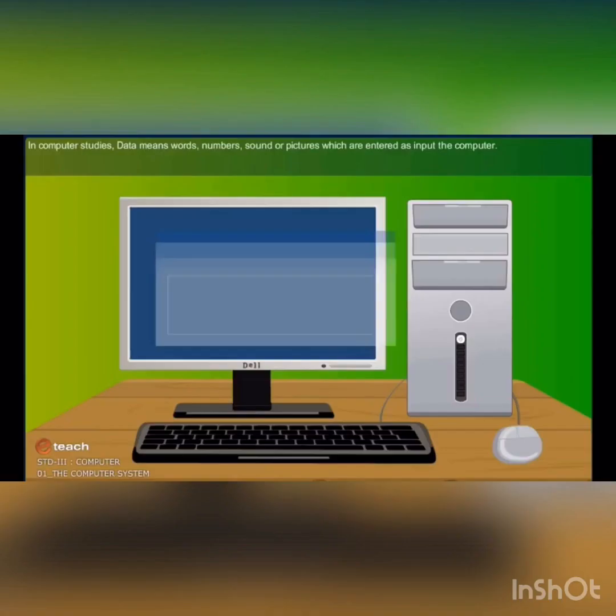Let's start with the main parts. There are four main parts of computer: CPU, keyboard, mouse and monitor.